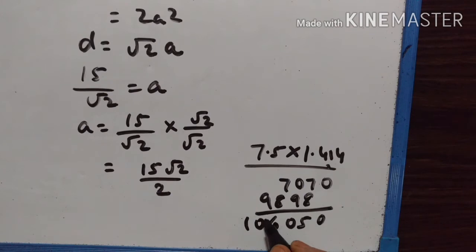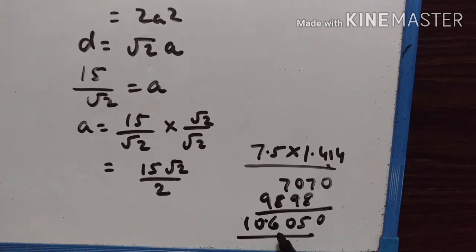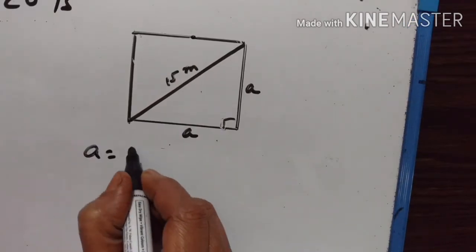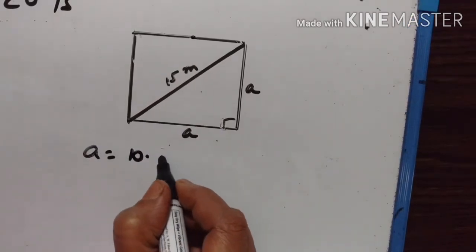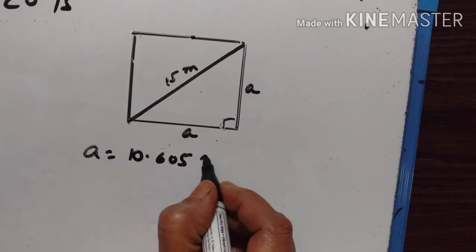Computing 7.5 multiplied by 1.414, we get 10.605. That is the side of the square. So side of the square, a, is equal to 10.605 meters.